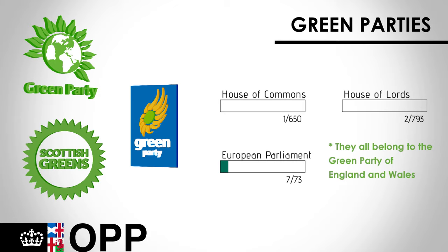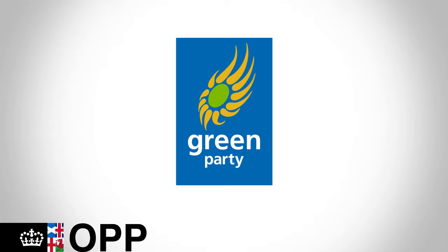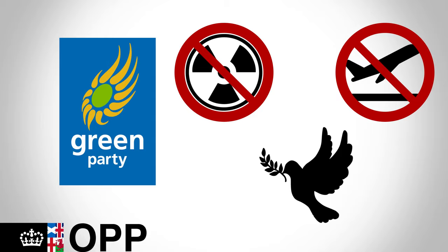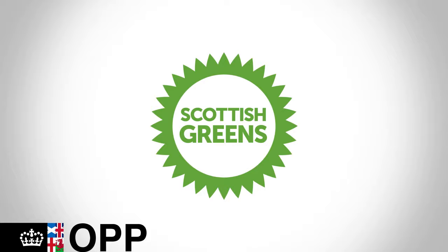There are three main independent Green parties operating in the UK, each running in separate constituent countries. All three are environmentalist parties that support remaining in the European Union. The Green Party of Northern Ireland is a regional branch of the Green Party of Ireland within the UK. They campaign against nuclear power and airport expansions, and also advocate for non-violence. The party holds two of the 90 seats in the Northern Ireland Assembly and is led by Northern Irish Assembly member Clare Bailey.